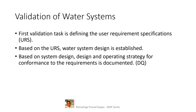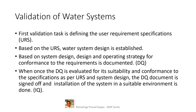Based on system design, the operating strategy for conformance to requirements is documented as DQ. At this milestone, design and operating strategies are documented in detail and signed off as approval of design qualification. When the DQ is evaluated for its suitability and conformance to the specifications as per URS and system design, the DQ document is signed off and installation of the system in a suitable environment is done — that is IQ.